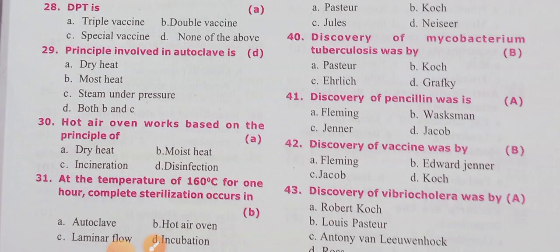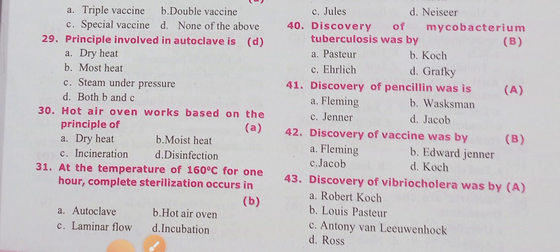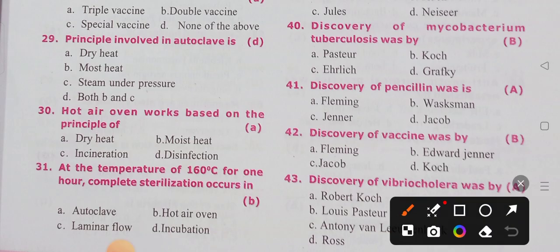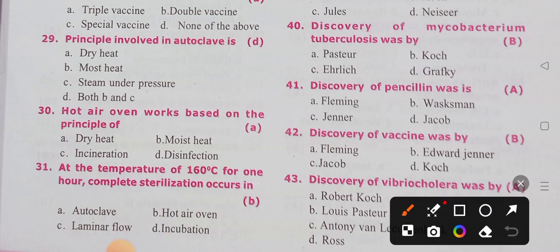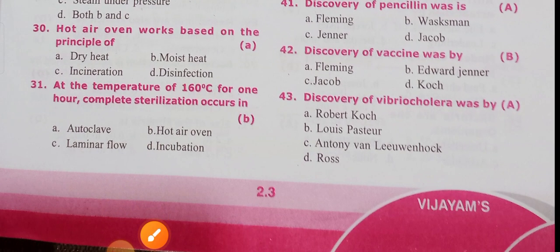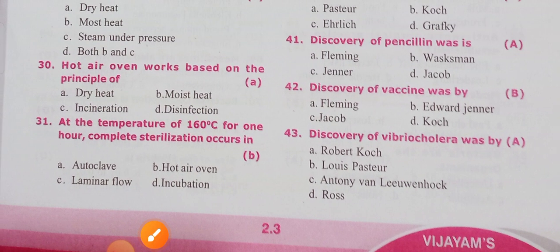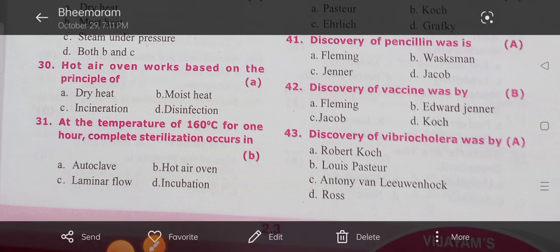Robert Koch introduced staining techniques and sterilization. Louis Pasteur discovered Mycobacterium tuberculosis — actually Koch discovered Mycobacterium tuberculosis. Discovery of penicillin was by Alexander Fleming. Discovery of the vaccine was by Edward Jenner.